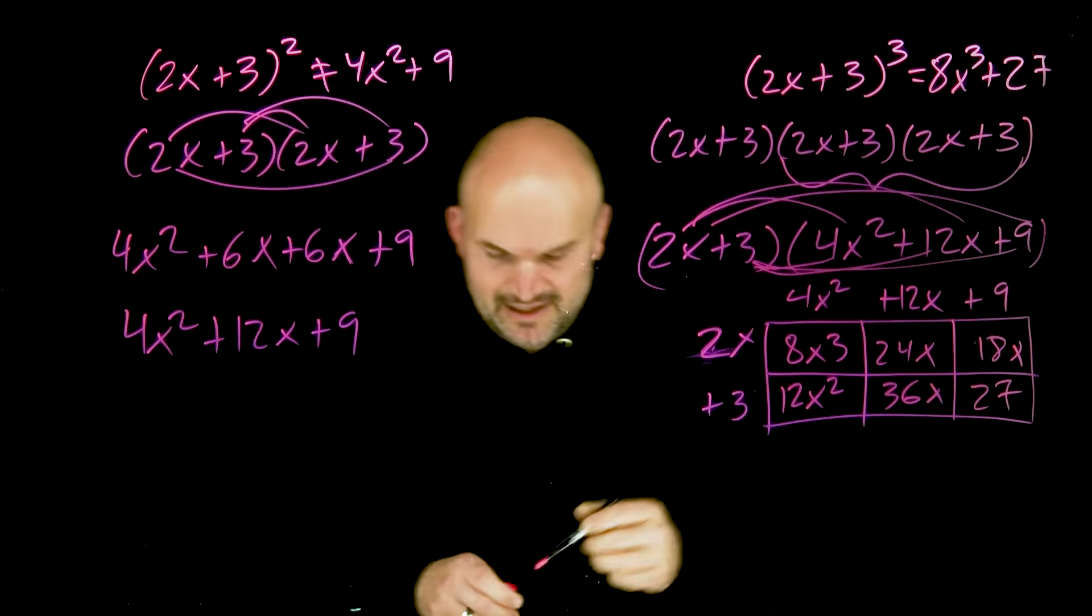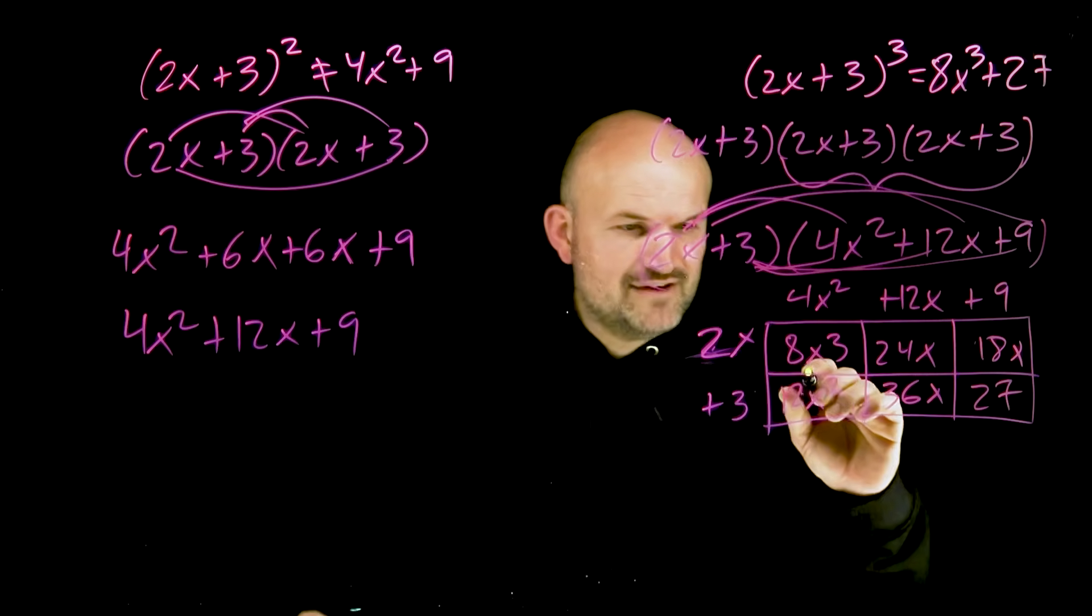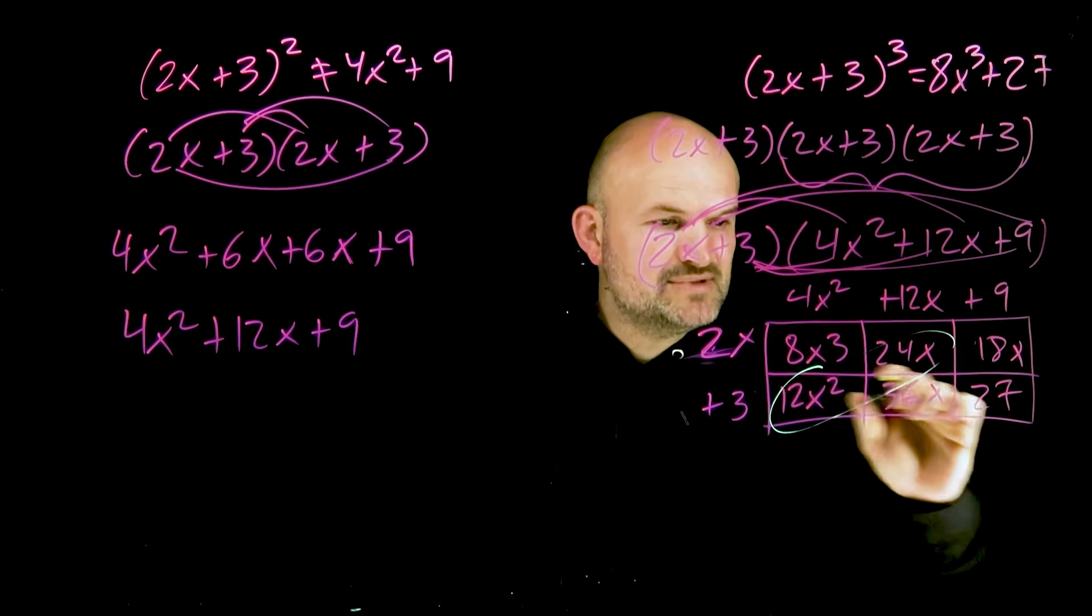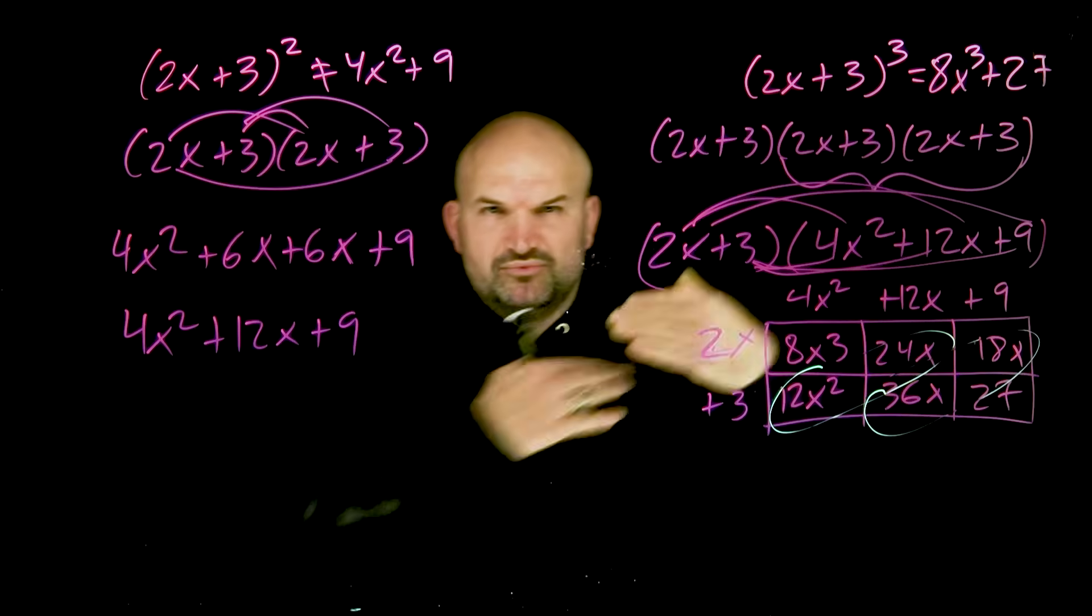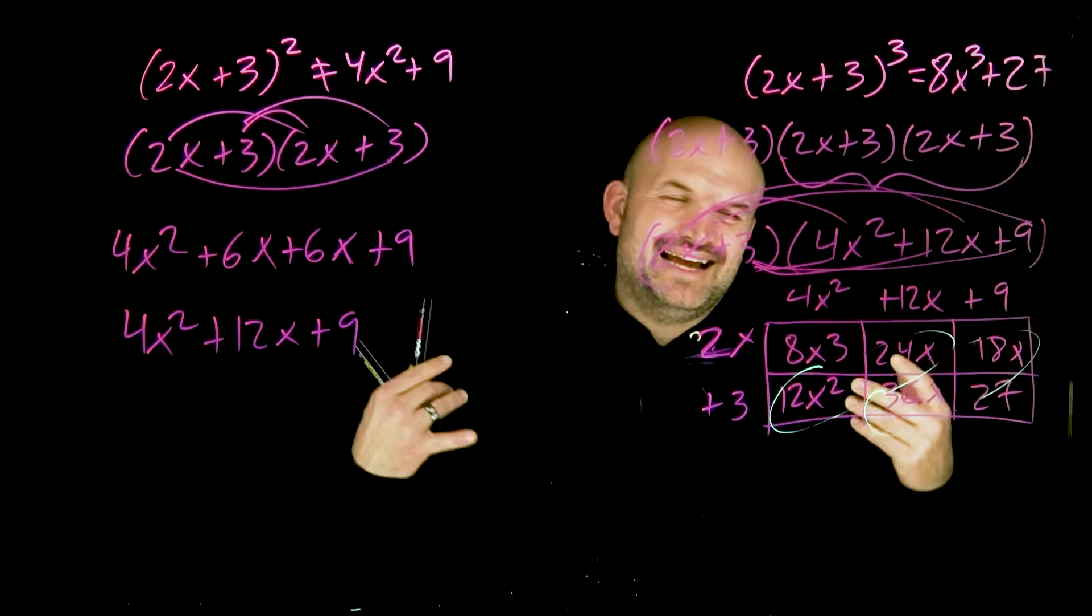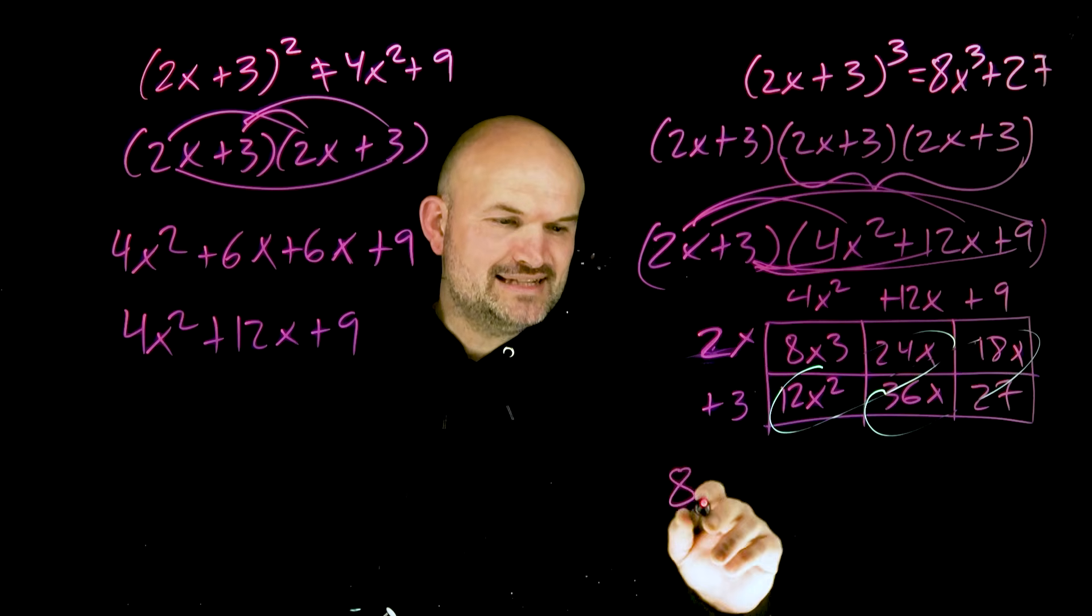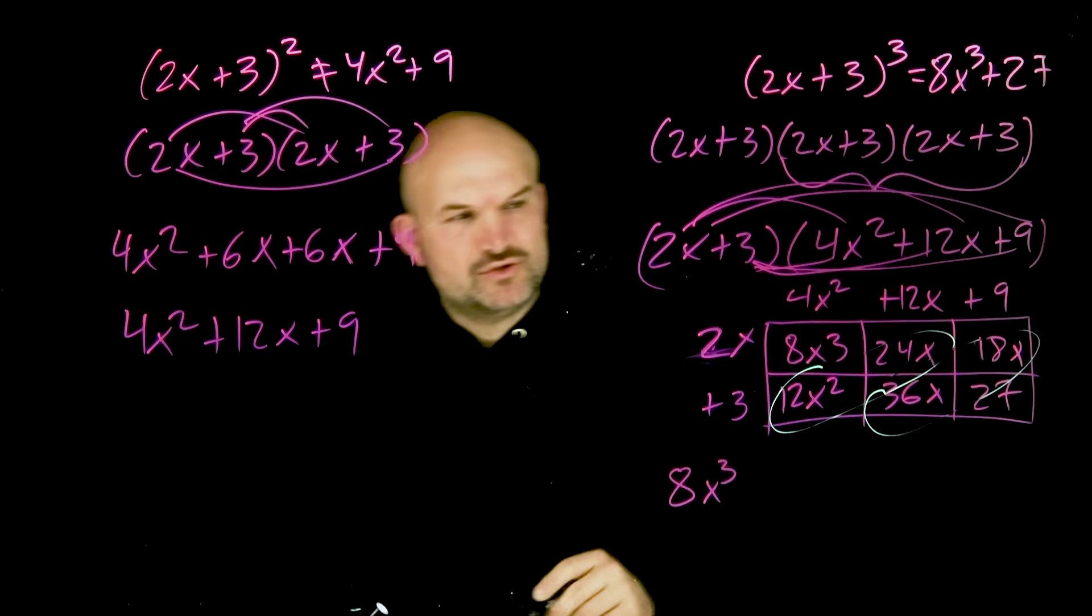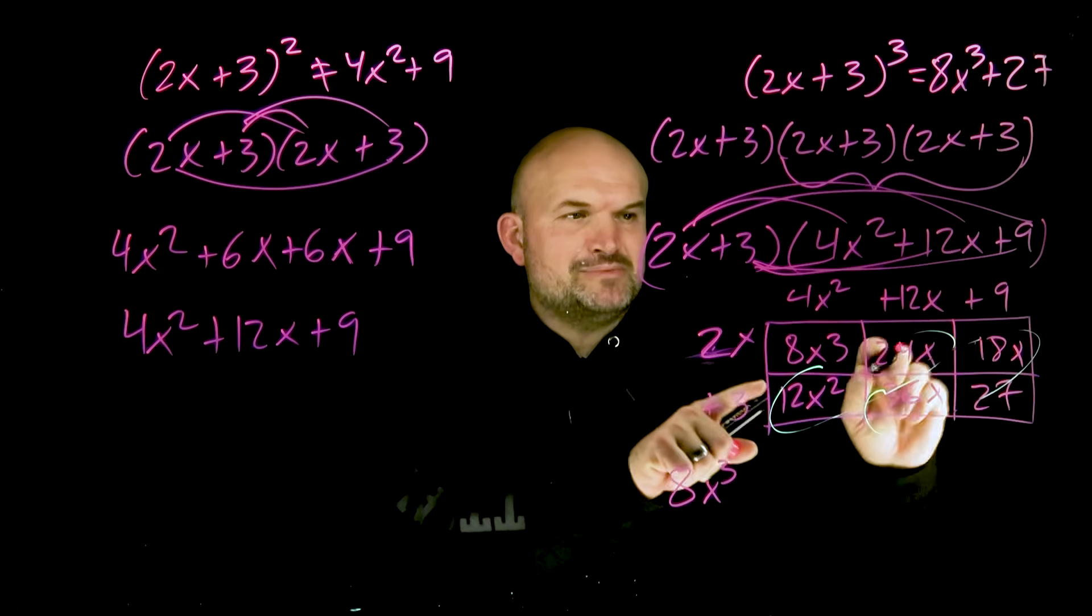Now, the other thing I love about the box method is if you look at these diagonals, on the diagonals we have like terms. A lot of times if you're using FOIL or distributive property, you align things above each other. But students will make mistakes and it can create a mess. I can see I made a mistake, right? These are supposed to be like terms. I wrote an x there, but this is x times x, so that's x squared. See how I checked my work?